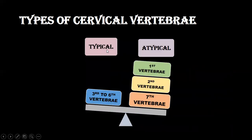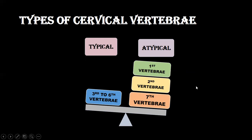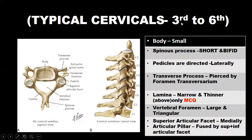The cervical vertebrae are further classified into typical and atypical. The typical vertebrae are the third, fourth, fifth, and sixth. The atypical are the first, second, and seventh. We place C3 to C6 in the typical group because they share common features, while C1, C2, and C7 are atypical because they have unique features that make them different from the rest.